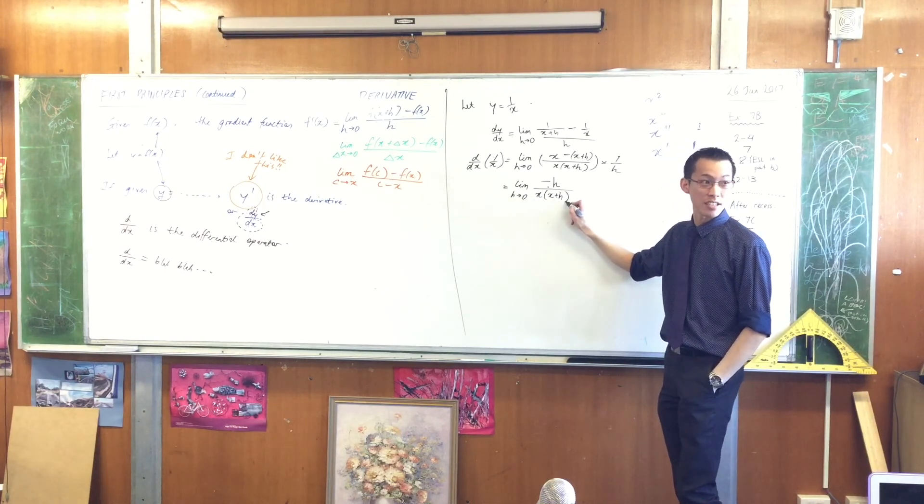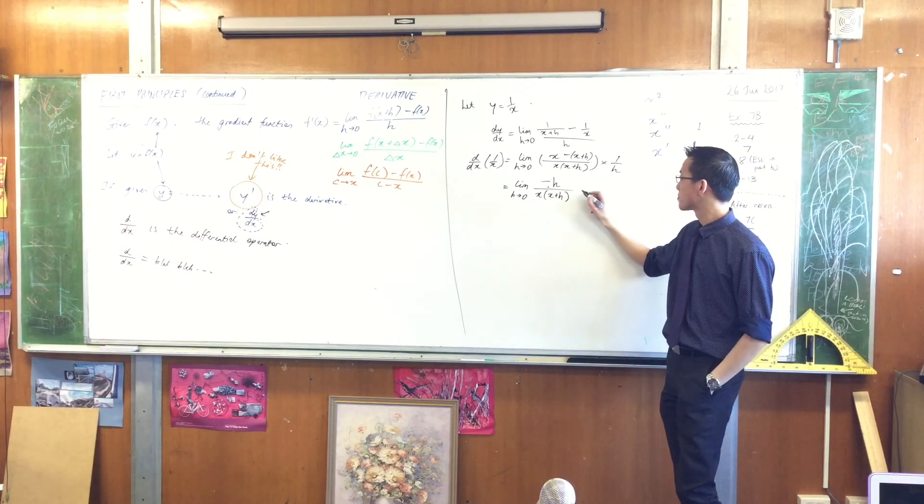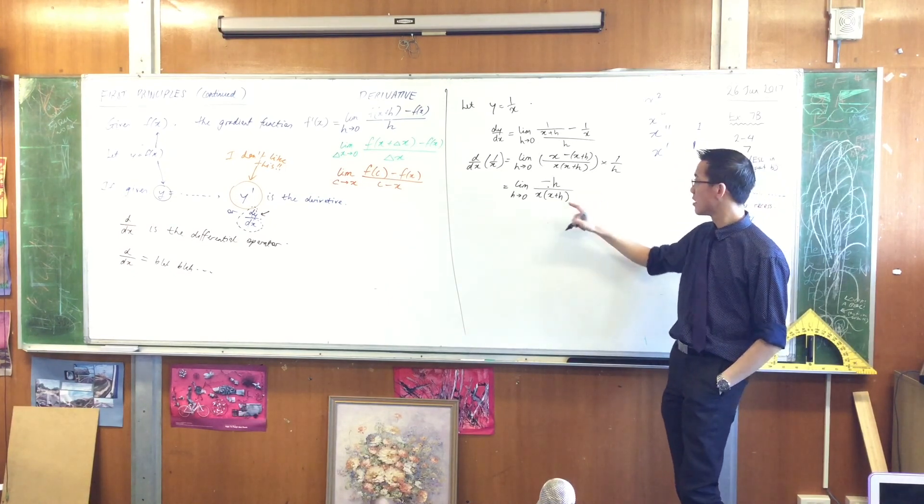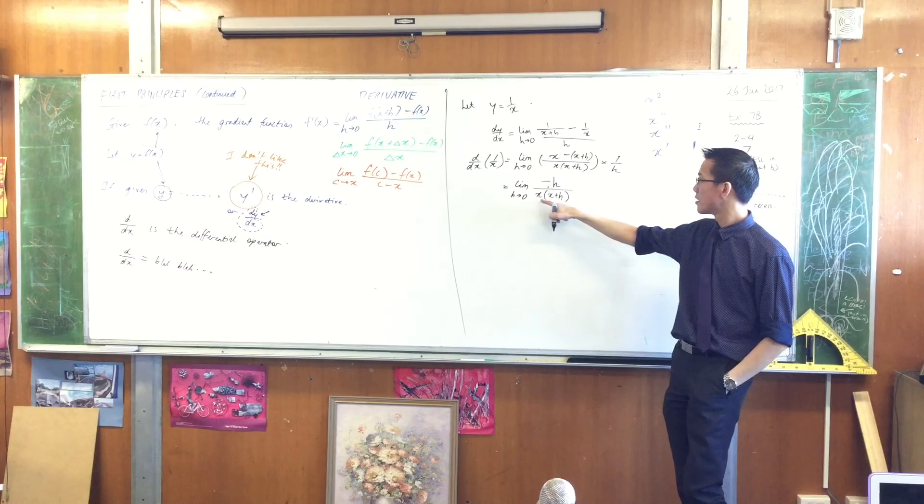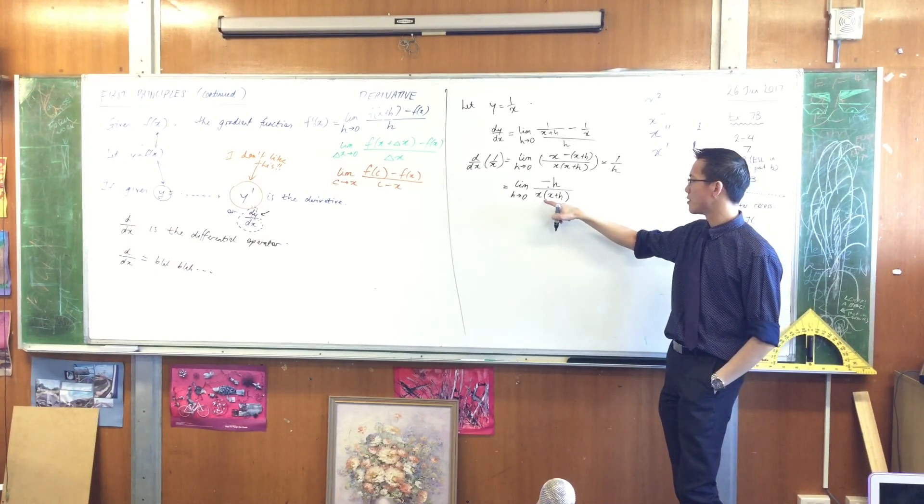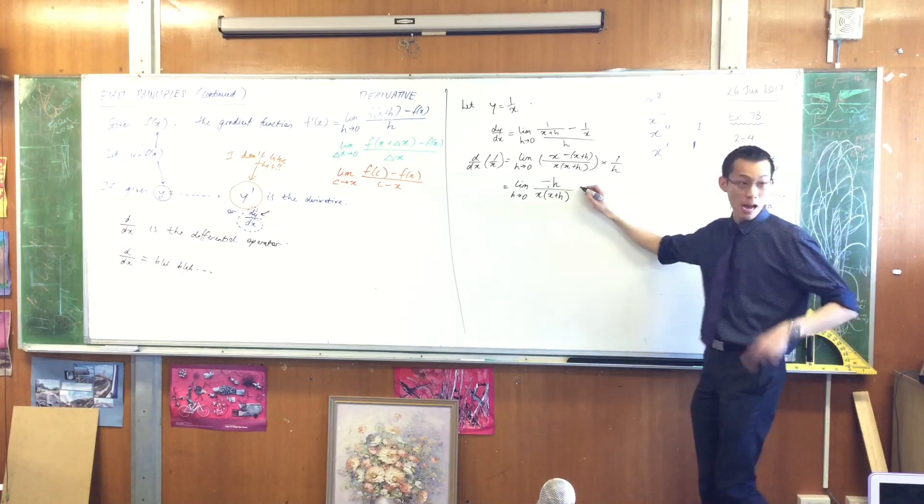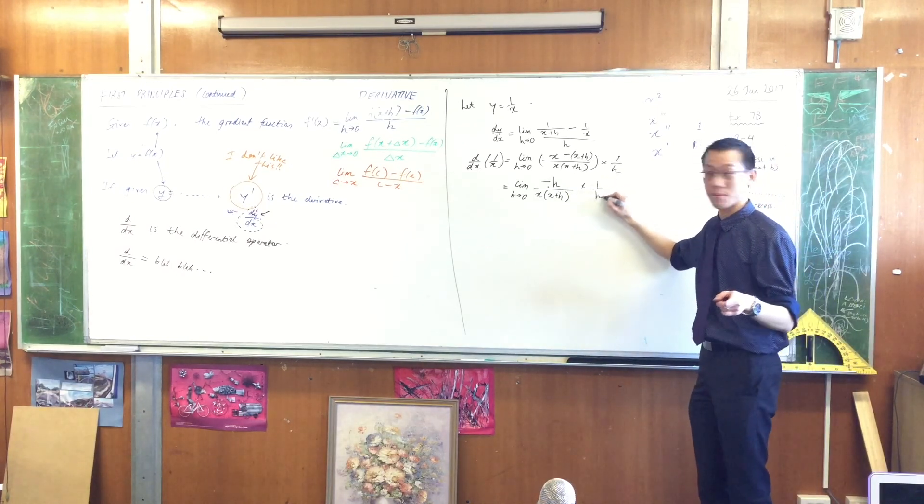The denominator hasn't changed, has it? Yeah, then you put x times h times x plus h, and then cross out the h. Wait. Oh, you're talking about this h? This h over here? Okay. I'm going to write that down as a separate thing over here.